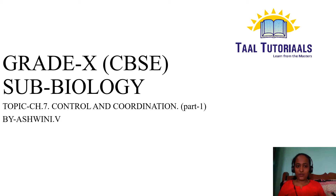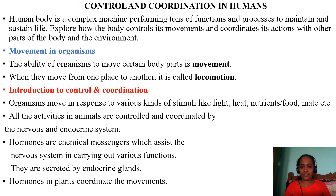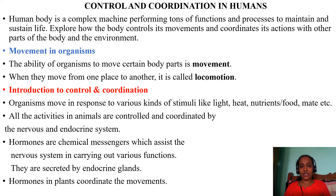Good morning class. Today we are going to do Chapter 7: Control and Coordination, Part 1. We are going to learn how we control and coordinate things in humans. The human body is a complex machine which performs millions of functions and processes to maintain and sustain life. Without the brain, humans cannot survive or control and coordinate their activities.